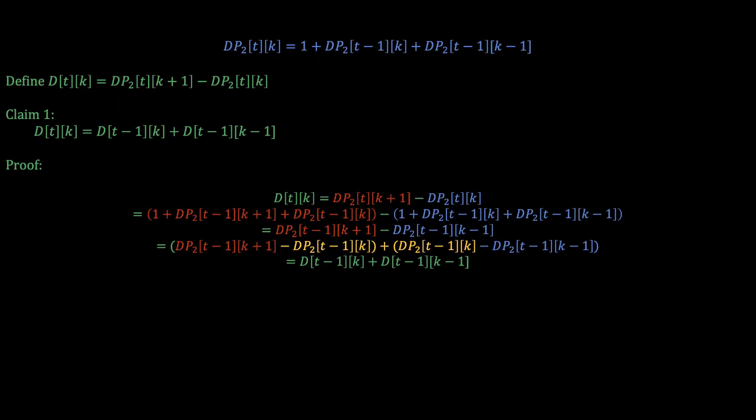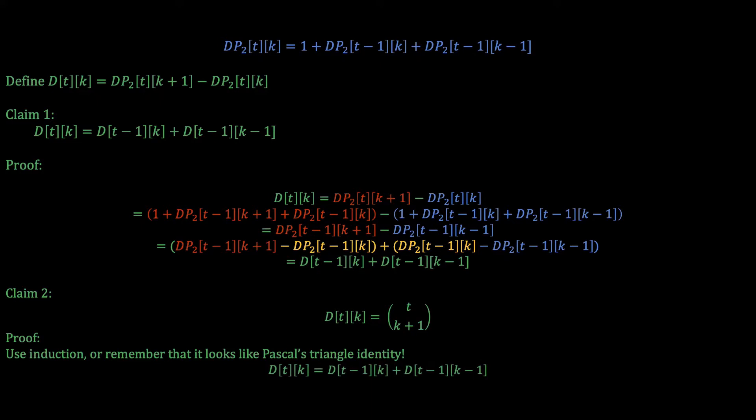Now if you stare for a very long time at this recurrence you will notice that it looks like Pascal triangle identity which brings us to the second claim. We claim that d[T][K] is T choose K+1. You can either use induction or remember that the recurrence looks eerily similar to the identity that defines the binomial terms. I've also added the proof here for the completion sake in case you're interested in it.